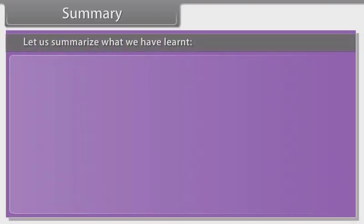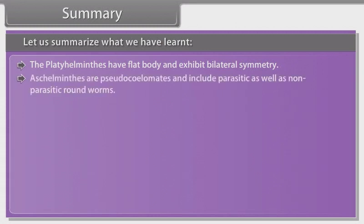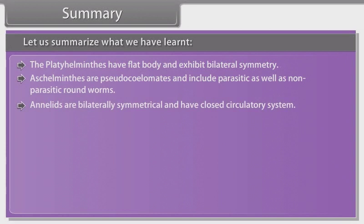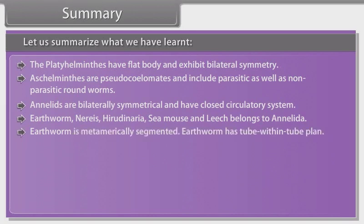Let us summarize what we have learned. Platyhelminthes have a flat body and exhibit bilateral symmetry. Aschelminthes are pseudocoelomates and include parasitic as well as non-parasitic roundworms. Annelids are bilaterally symmetrical and have a closed circulatory system. Earthworms, Nereis, Hirudinaria, Sea mouse and Leech belong to Annelida. Earthworm is metamerically segmented and has a tube-within-tube body plan.